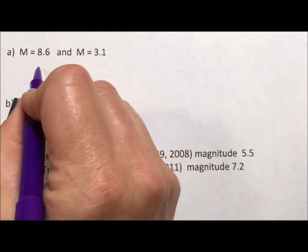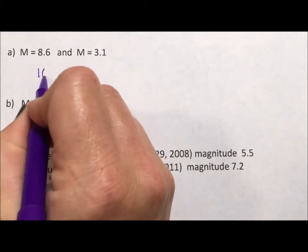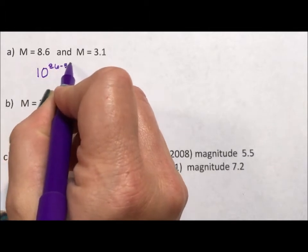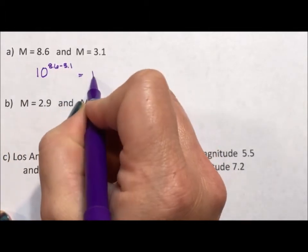And if we want to compare their difference, I just find the difference. I say 10 to the 8.6 minus 3.1 equals 10 to the 5.5.